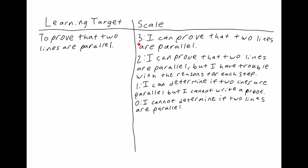The scale for this lesson is a three: you can prove that two lines are parallel. Two: you can prove that two lines are parallel, but you have trouble with the reasons for the step — the explaining why. One: you can determine if two lines are parallel, but you can't write a proof. And zero: you cannot determine if two lines are parallel.